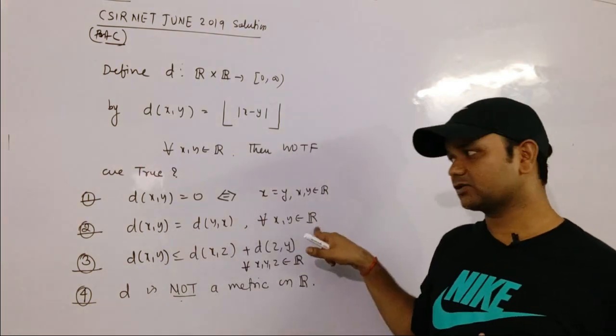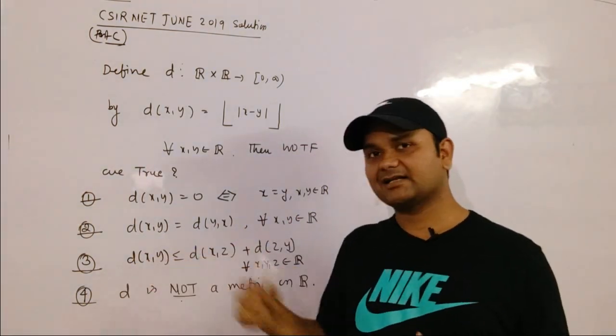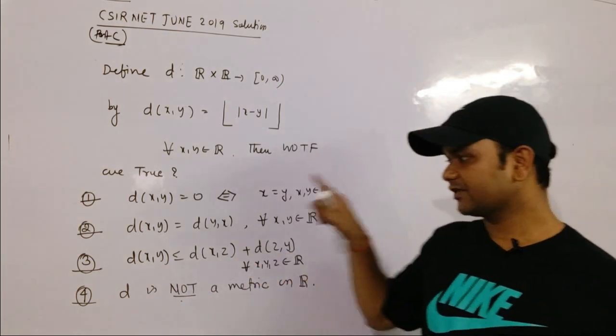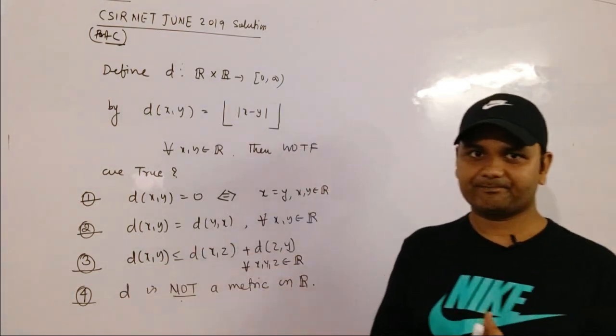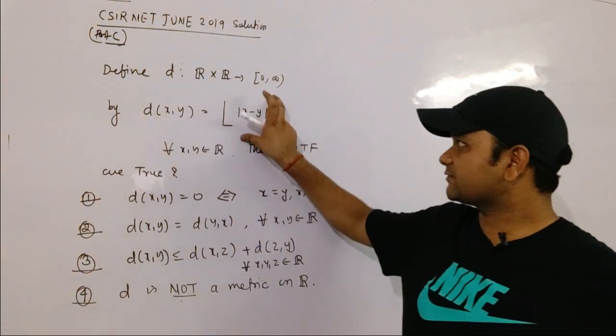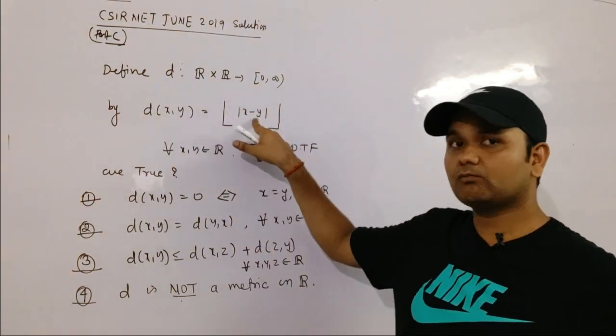Third, the triangle inequality d(x,y) ≤ d(x,z) + d(z,y) for all x,y,z. Fourth, d is NOT a metric. So they have defined a function by greatest integer function, and you are asking whether d(x,y) = 0 implies x = y, whether this satisfies triangle inequality or not, or whether d is a metric or not.